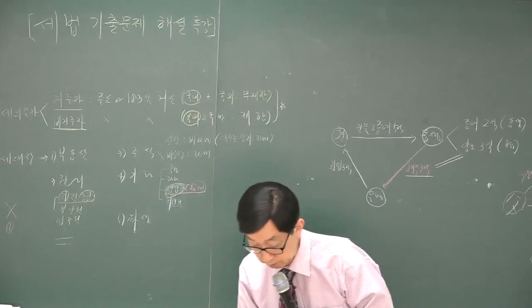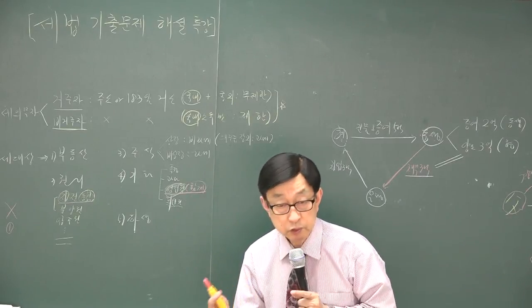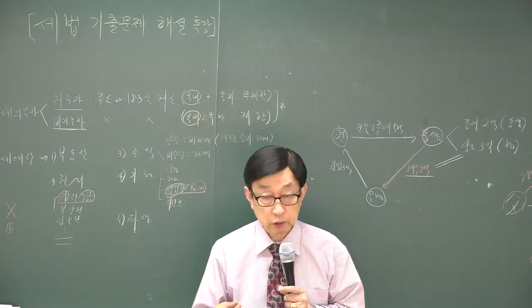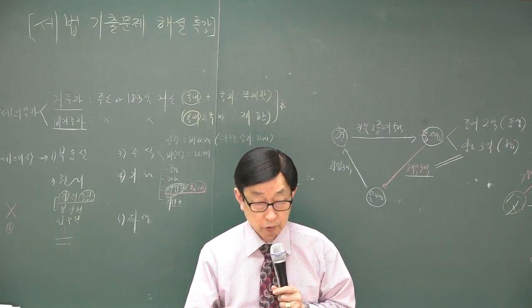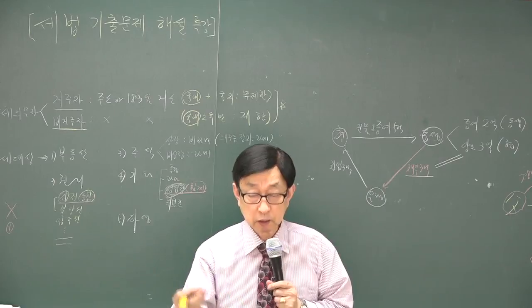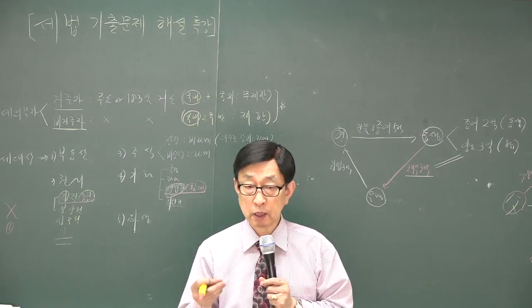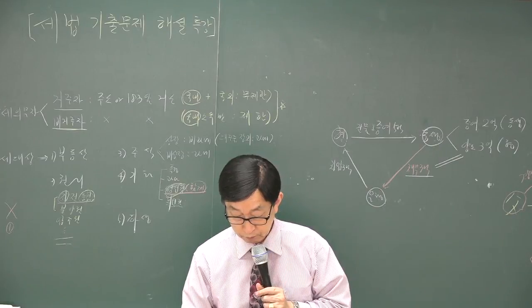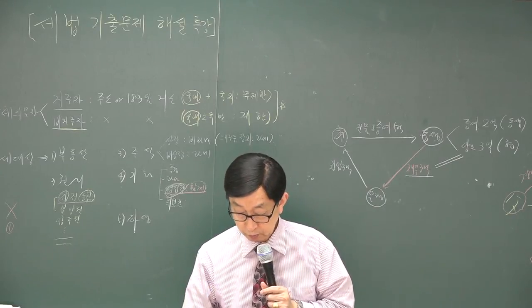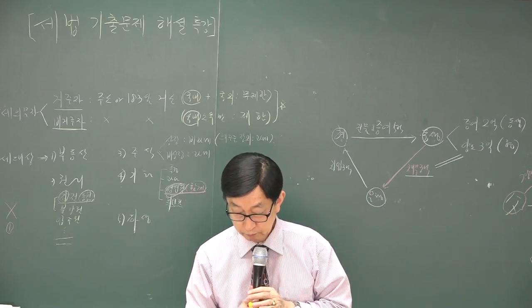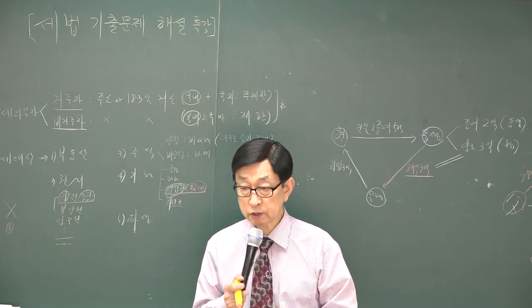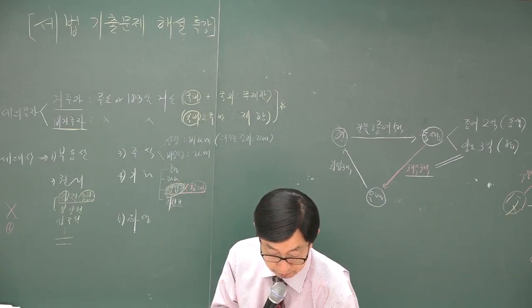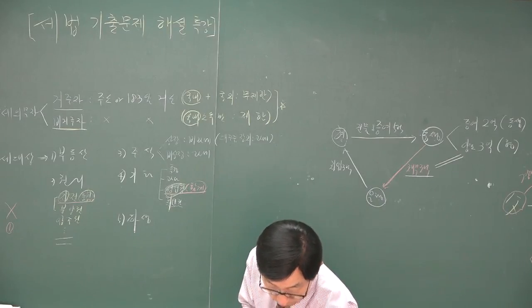다시 정리: 1번 - 공유 지분 변경 없으면 양도 아님. 2번 - 보류지 팔았으면 양도. 3번 - 등기등록과 관계없이 사실상 유상이전은 양도. 4번 - 부부간에는 원칙상 증여로 보므로 '항상'이라는 표현이 틀렸습니다.